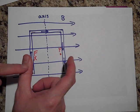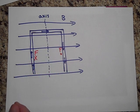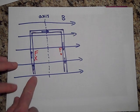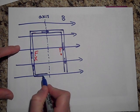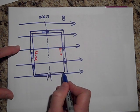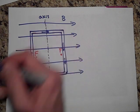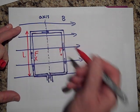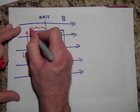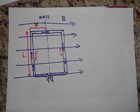So this thing is going to rotate — one side pushed down and the other pushed out at us, causing rotation. This is a loop or coil of wire. Let's label it: the length of this side of the wire is L, and the distance across is x.